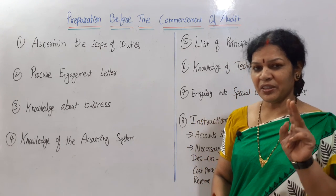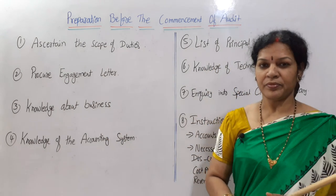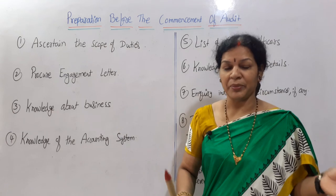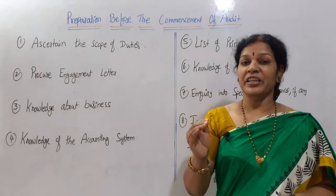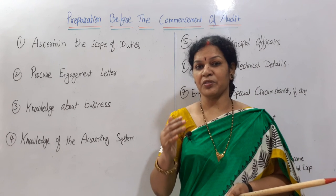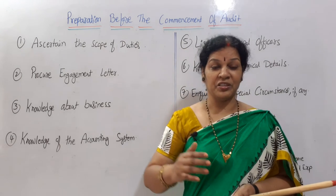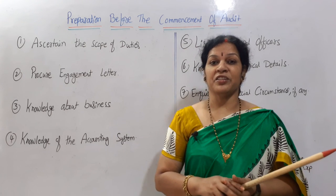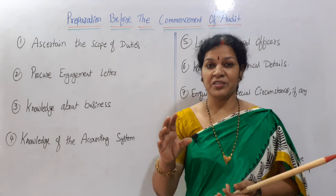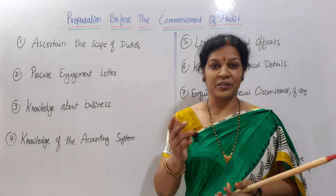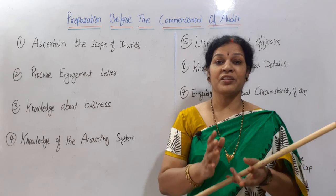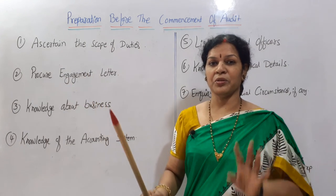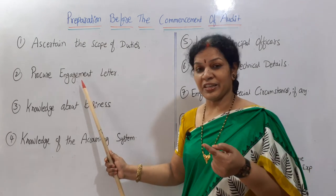The second step is to immediately procure the engagement letter. The engagement letter, also known as the appointment letter, must clearly mention the date of appointment, the period, the auditor's remuneration, and his duties. If the auditor gets any doubts, he must clarify them right there, because tomorrow there may be misunderstandings or confusion. Having clarity on the appointment letter gives the auditor confidence to commence work in the company.